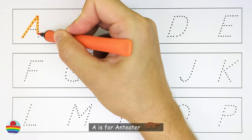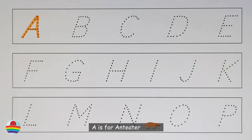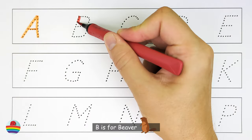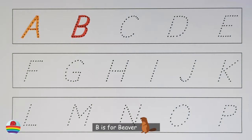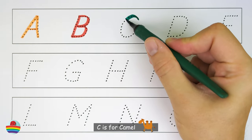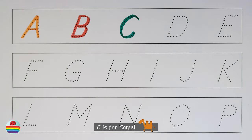A. A is for anteater. B. B is for beaver. C. C is for camel.